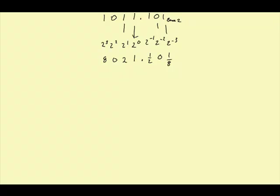Now, if I were going to turn this number in base 2 into base 10, I would simply add all of these up, which would give me 8 plus 2 is 10, plus 1 is 11. And then 1 half plus 1 eighth, I would get a common denominator, which would make it 4 eighths, plus 1 eighth, would be 5 eighths. So basically, this number in base 2 is equivalent to 11 and 5 eighths in base 10.